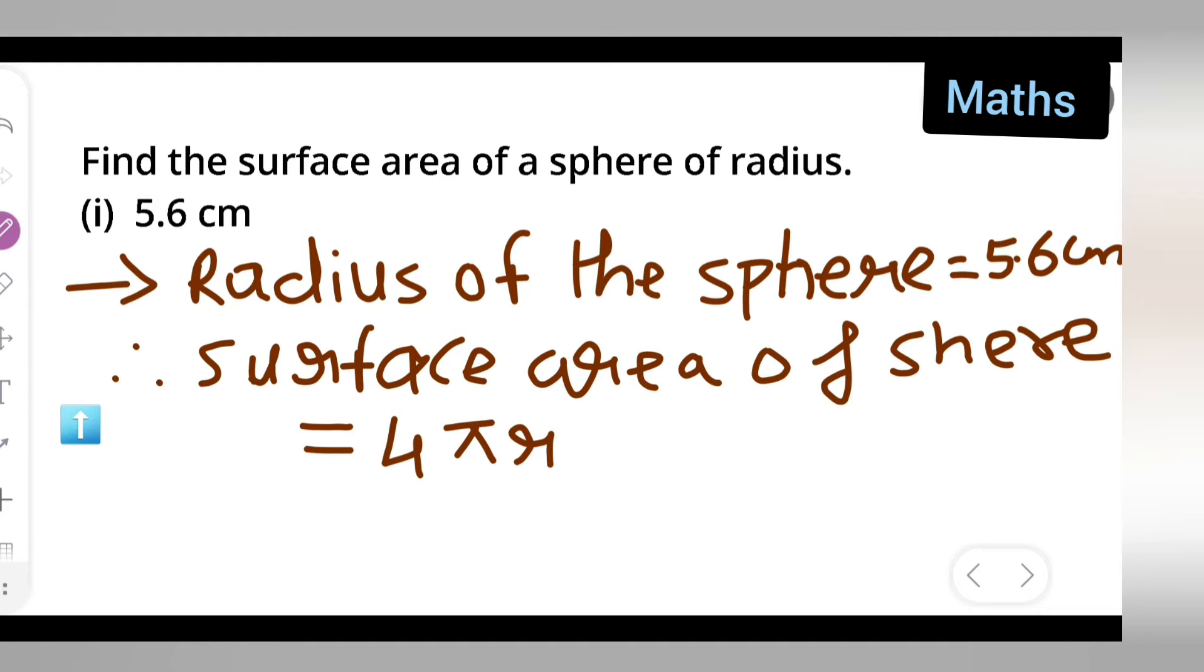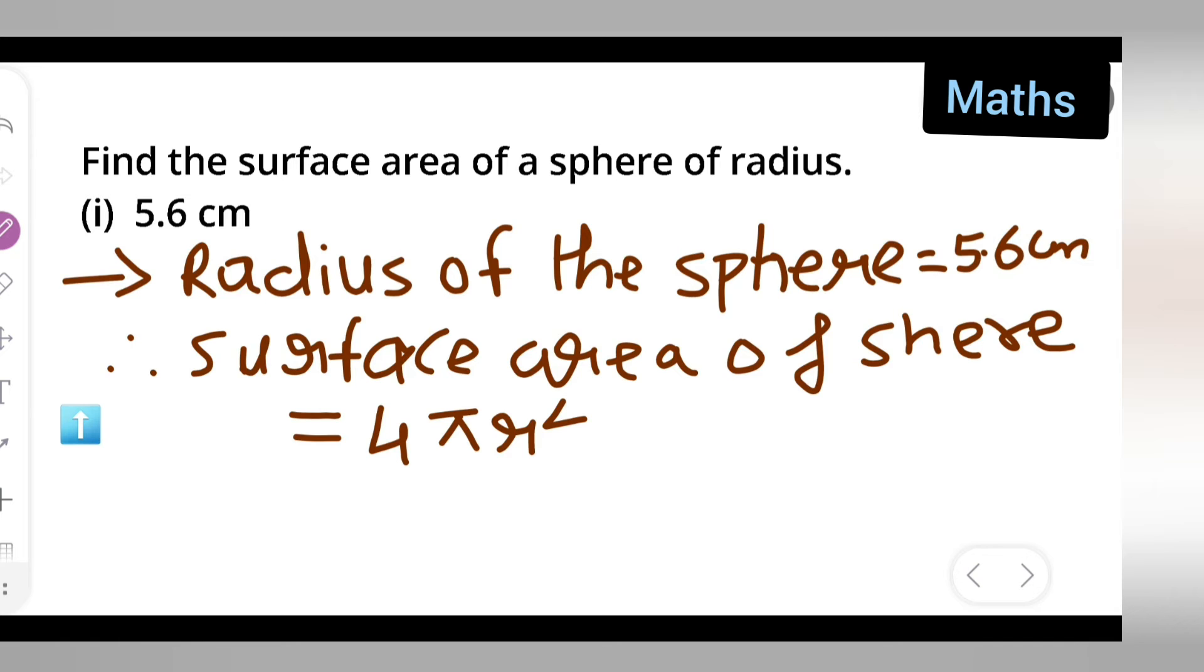4 pi r square. So write down this, this is equal to 4 multiplied by what is the value of pi? 22 upon 7.